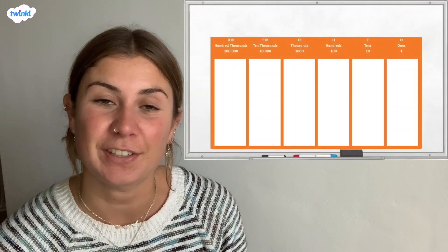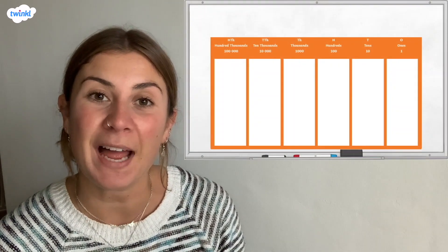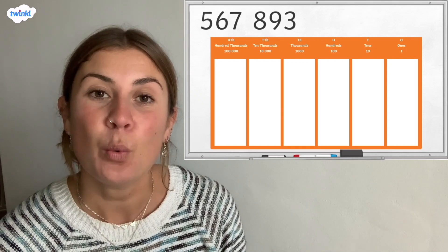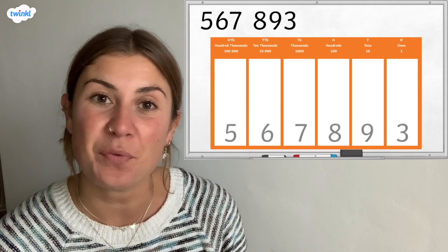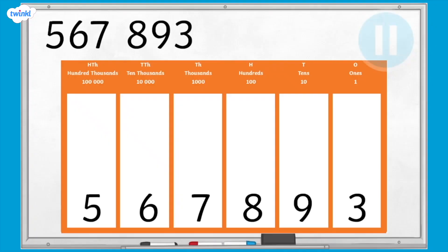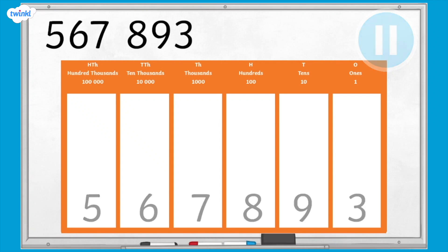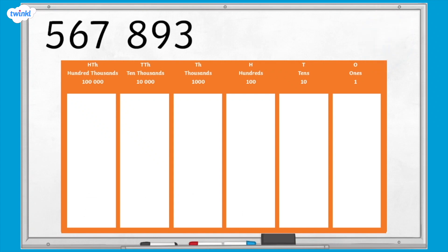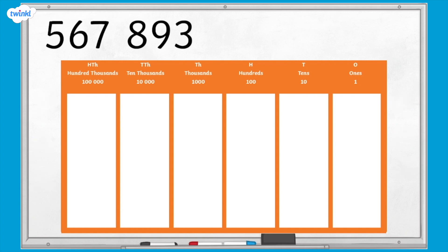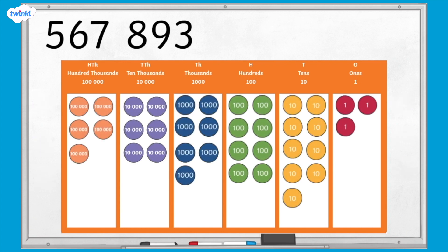Let's take a look at an example of a column subtraction calculation. We're going to begin with a blank place value grid. The number written on the place value grid is 567,893. I'm going to represent this number in the place value grid using place value counters.